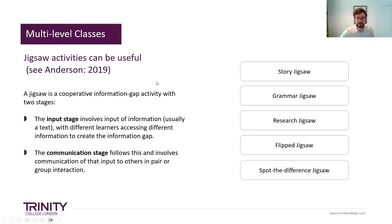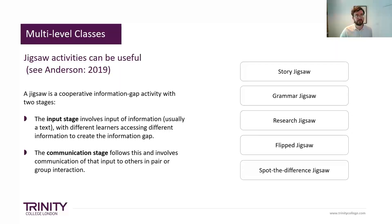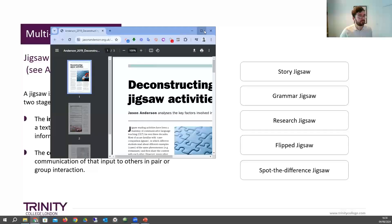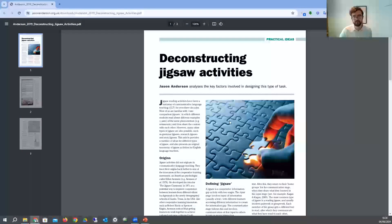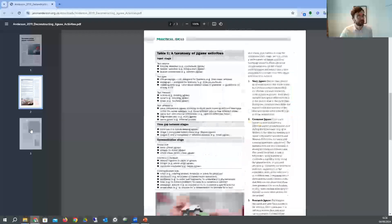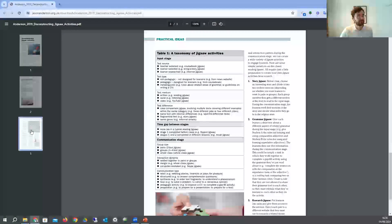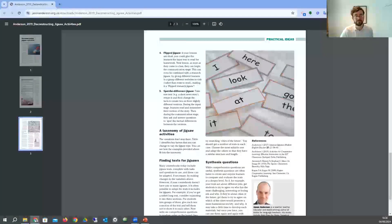I'll put a link in the chat — it's an article by Jason Anderson, who I'd recommend highly. It's from about five years ago, from Modern English Teacher or available via his website. This article about jigsaw activities is very useful for multi-level groups. It's a short article — three pages — and describes different types of jigsaw activities. A story jigsaw: students have different stories, read and summarize in their groups, then join someone from another group to retell the story without the original text — they have to actually process it and communicate the key facts.